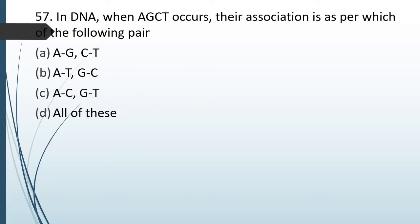Question No. 57: In DNA, when A, G, C, T occur, their association as per which of the following pairs is seen? A with G, C with T; A with T and G with C; A with C and G with T; or all of these? The correct answer is Option B: A always bonds with T, and G pairs with C.